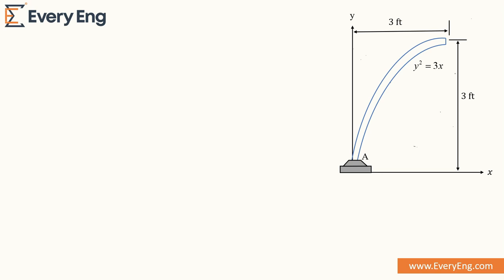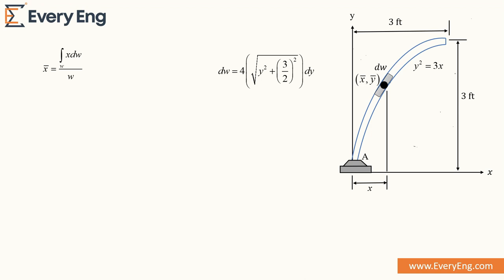Now, after solving the weight of the uniform rod, we need to calculate the centroid of this uniform rod from the y-axis. We consider the small element whose weight is dw and centroid is at (x, y). We need the centroid distance from the y-axis, so we assume that distance is x. Using the centroid formula, with x obtained from the parabolic equation as x = y²/3, and the weight of the uniform rod being 26.62 pounds.